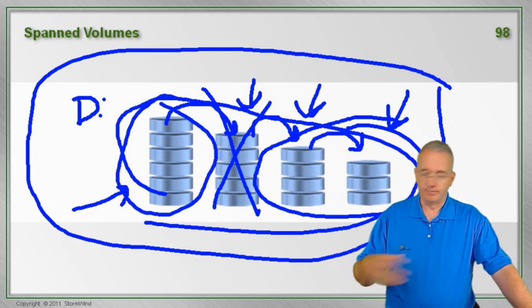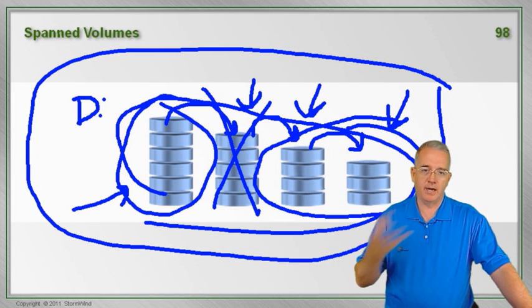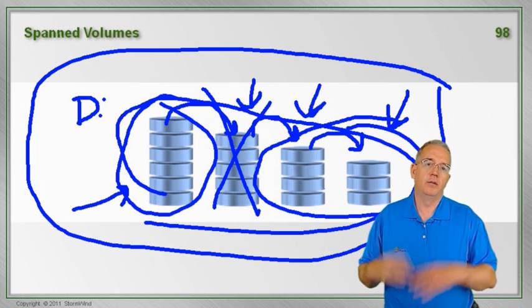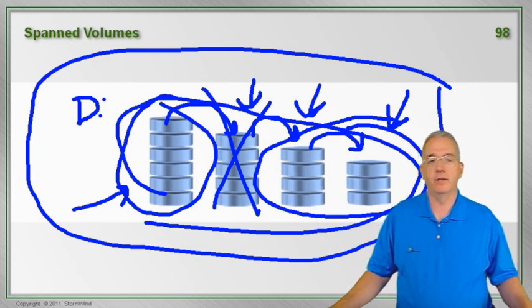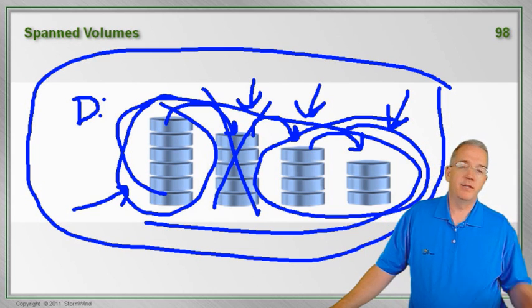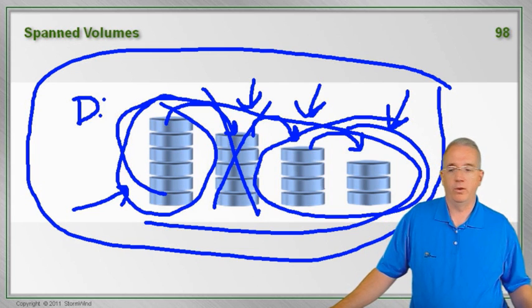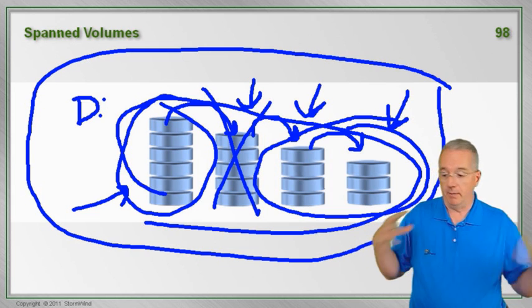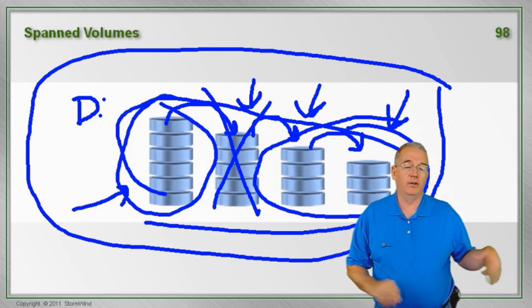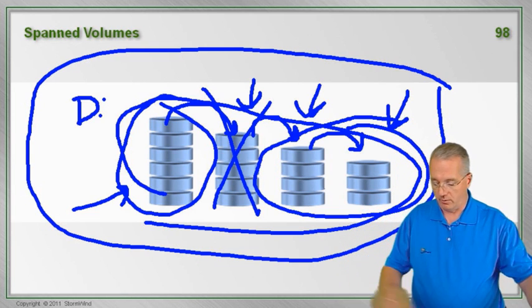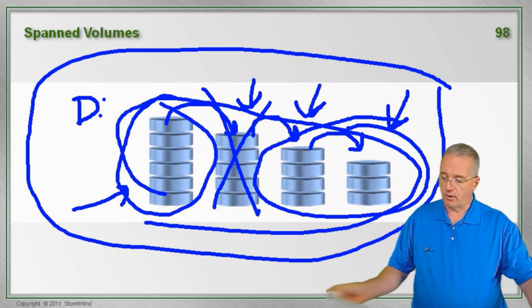They'll give you an error saying our span set's got missing members and such. You can break the span set and then just go into the drives and read the information. So this is just to give you more space. If you're doing Word documents or high-end graphics and you're just running out of space, a span volume can work for you.